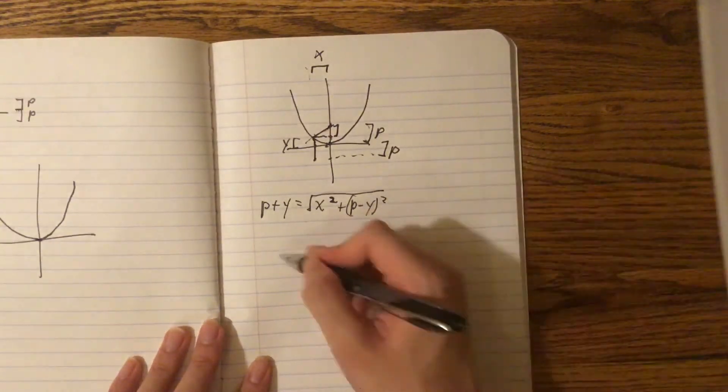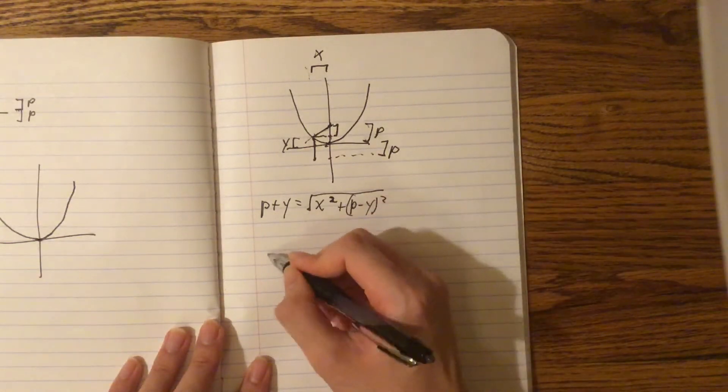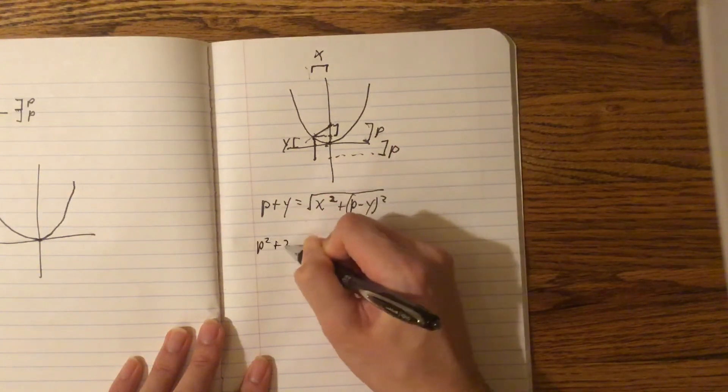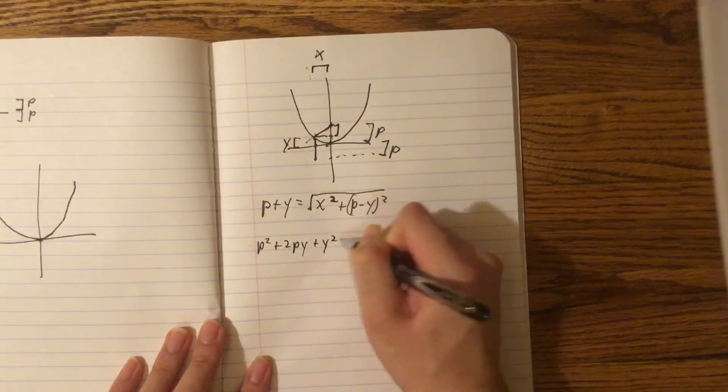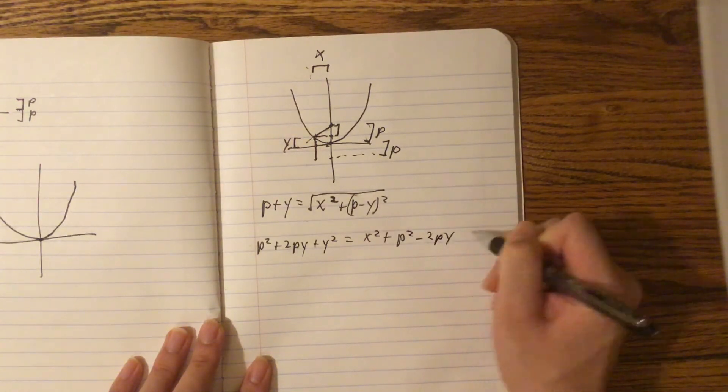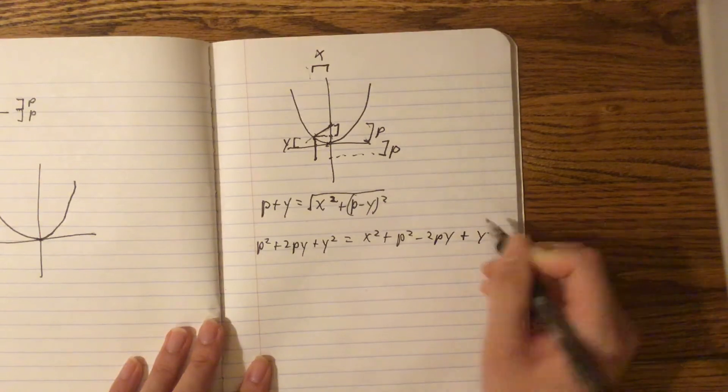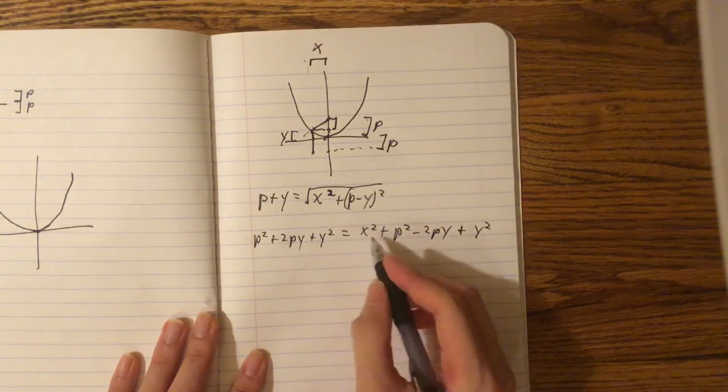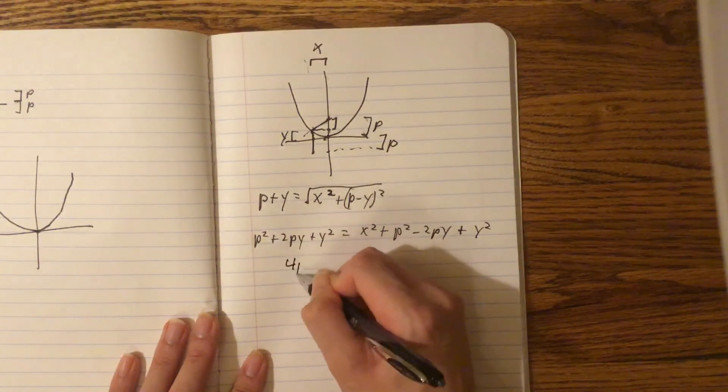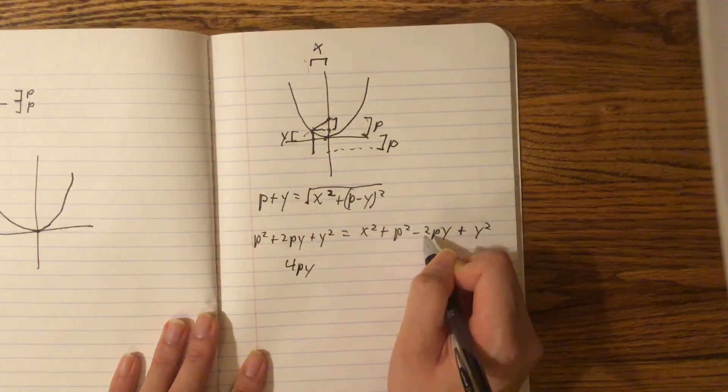Now we have this formula. So, let's square both sides. So, p squared plus 2py plus y squared equals x squared plus, I'm just going to factor everything out, plus y squared. And some things cancel out. P squared cancel out. 4py stays the same though. Y squared cancels out.